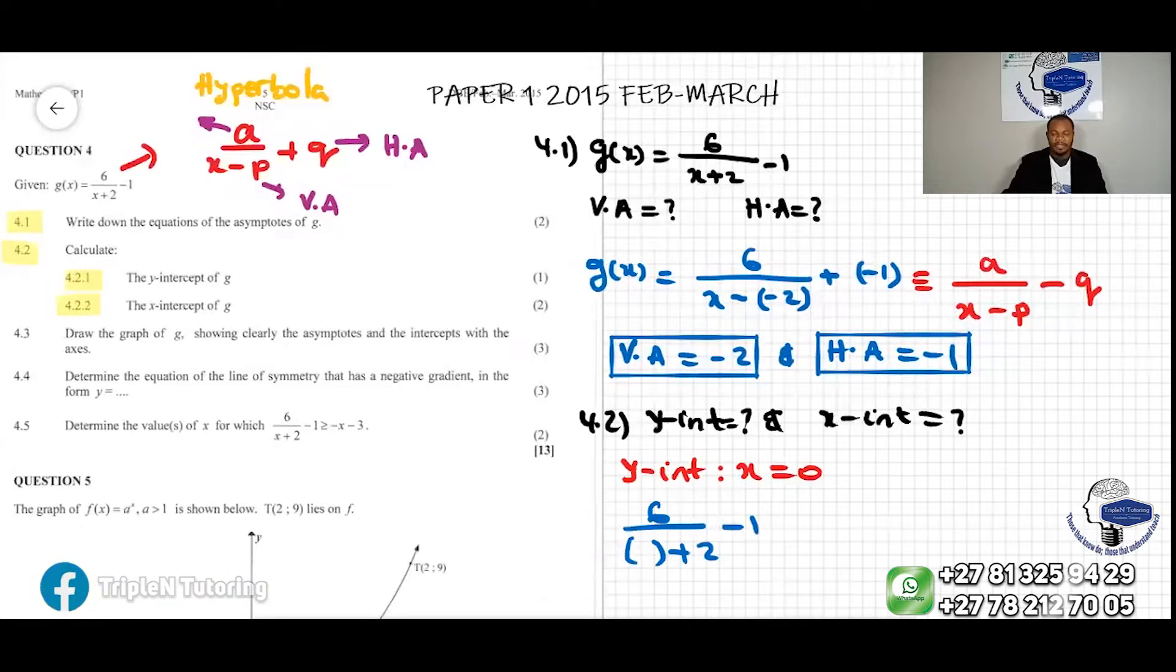And then we substitute the value of x by zero over here. Now this would be equal to, so it's y equal to, so that makes y equal to 6 over 2 minus 1.